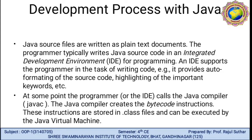Let me discuss the development process with Java. Java source files are written as plain text documents. You can write a Java program in any Notepad or Notepad++ editor. The programmer typically writes Java source code in an Integrated Development Environment, IDE. The IDE supports the programmer by providing auto-formatting of source code and highlighting of important keywords. The programmer or IDE calls the Java compiler, javac, which creates bytecode instructions stored in .class files that can be executed by the Java Virtual Machine.